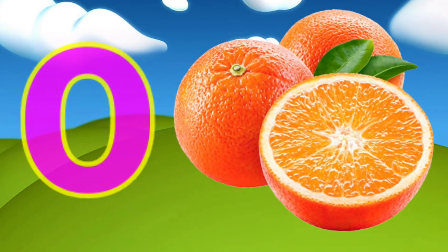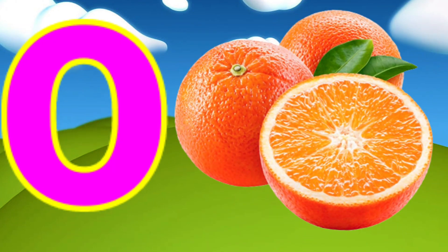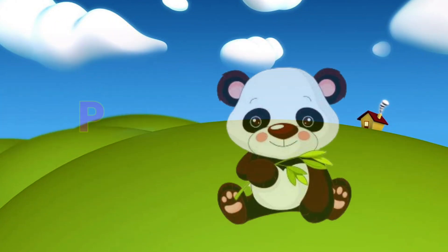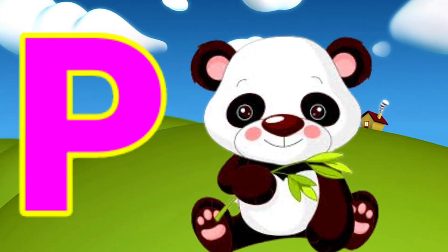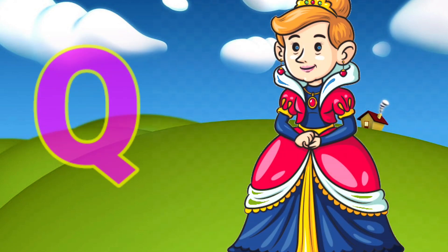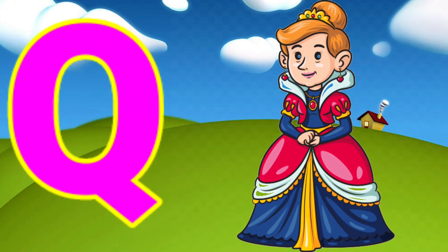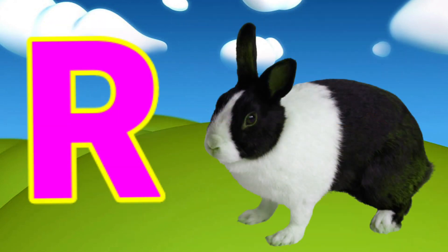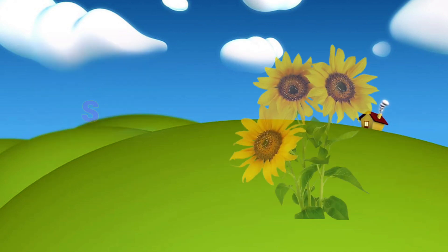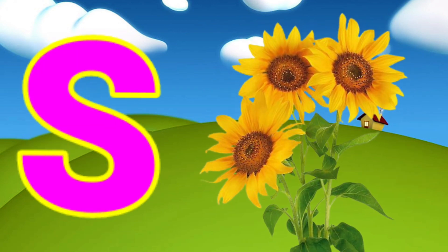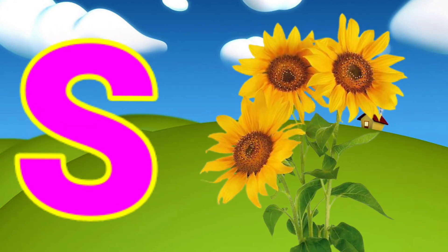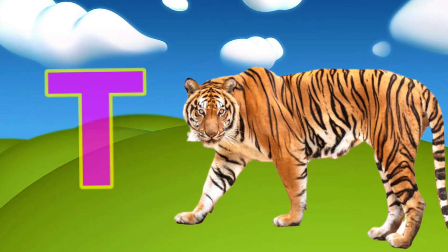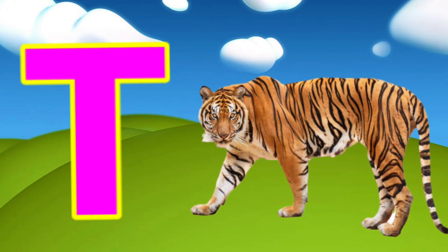O for orange, P for panda, U for queen, R for rabbit, S for sunflower, E for tiger.